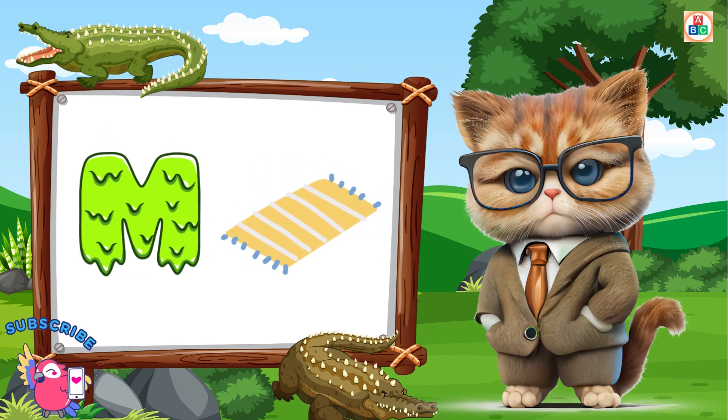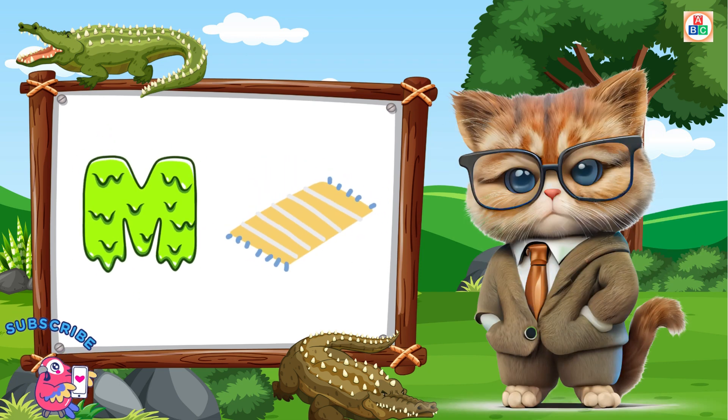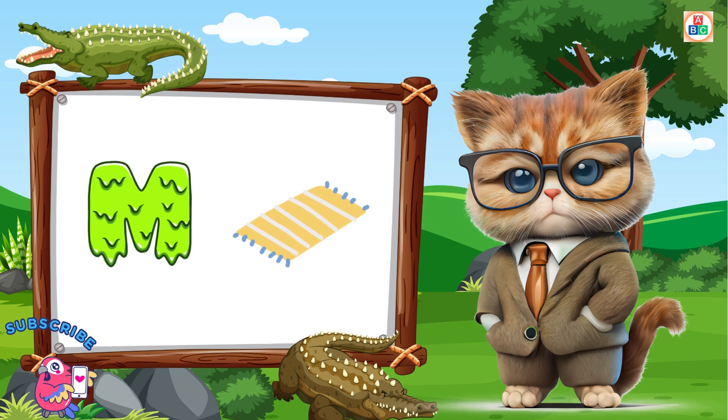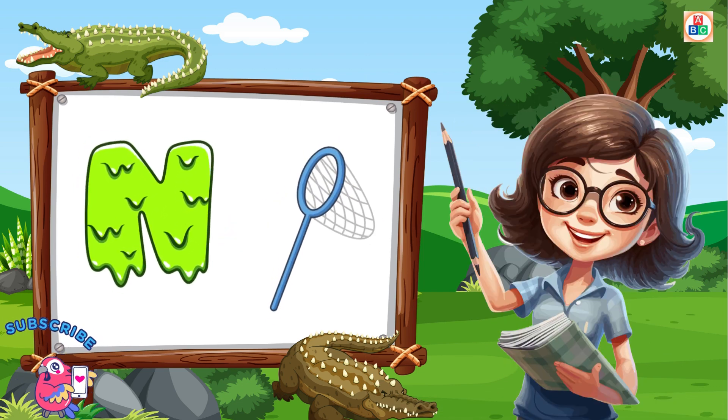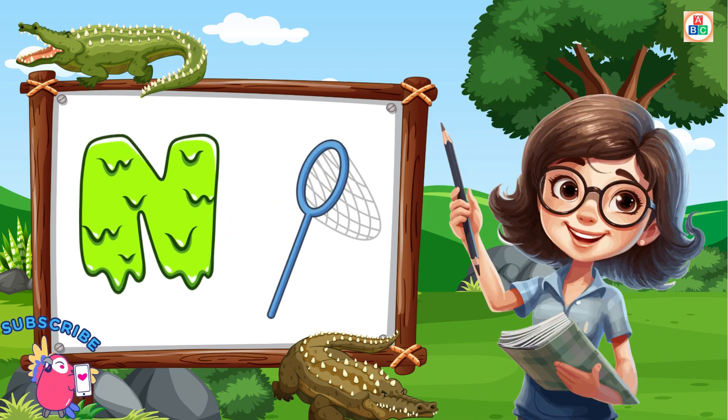M is for mat, m-m-mat. N is for net, n-n-net.